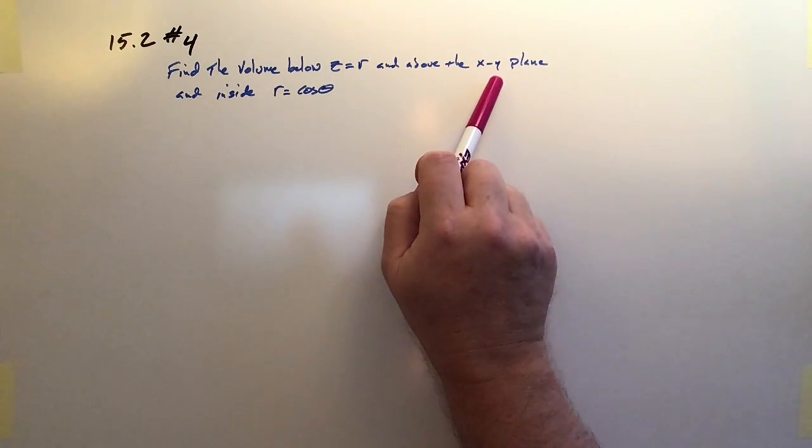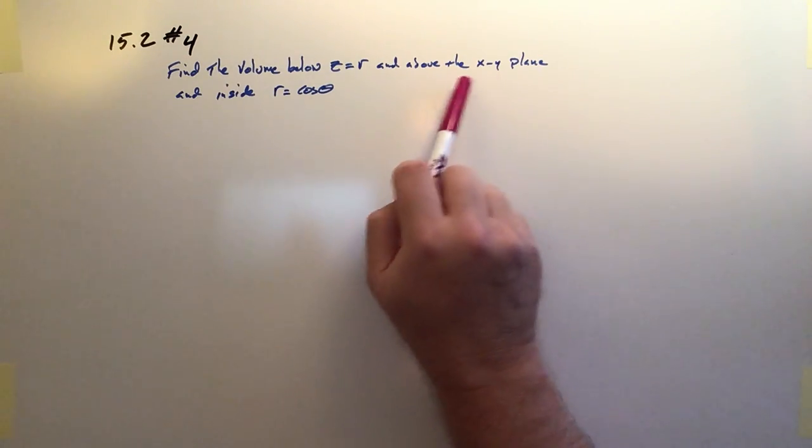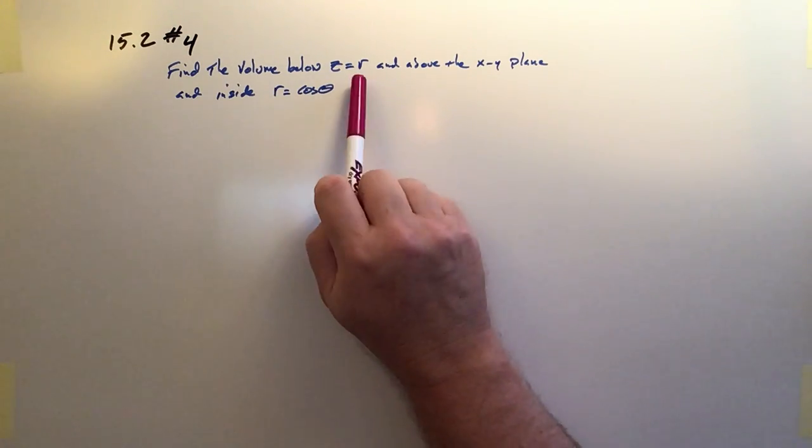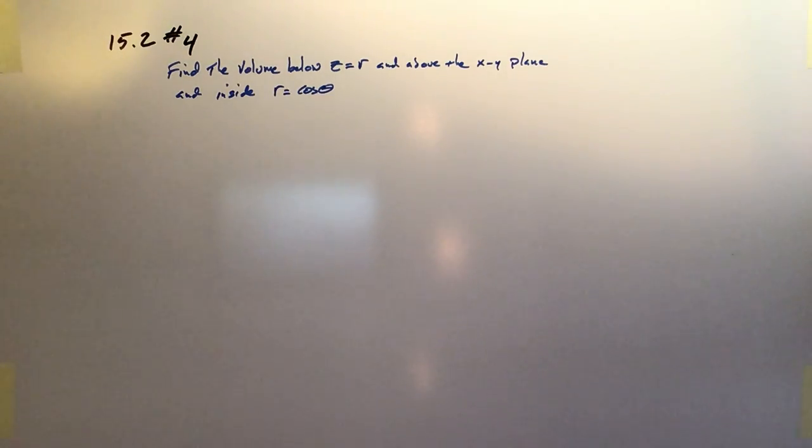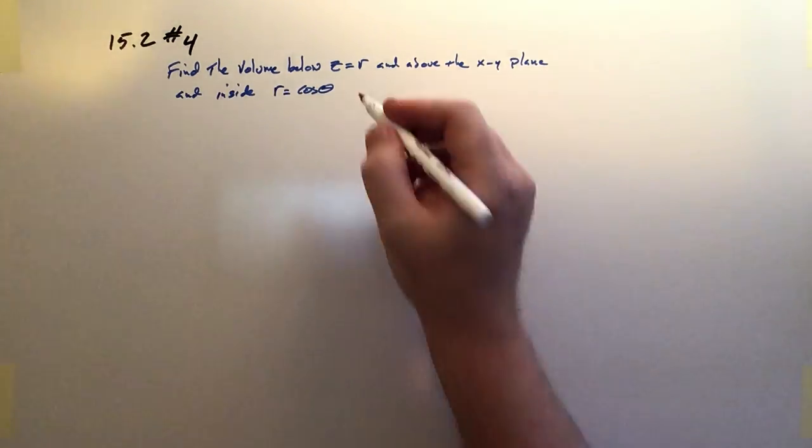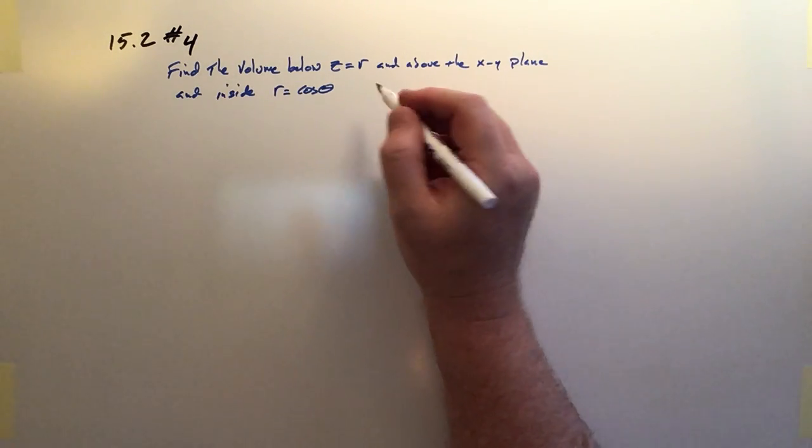And it all has to be above the xy plane. That's going to limit our domain because if it all has to be above the xy plane, we don't want any r's or z's to be negative and go below the plane, so I have to limit the domain of cosine theta to those that return positive values. And of course that's between pi over 2 and negative pi over 2.